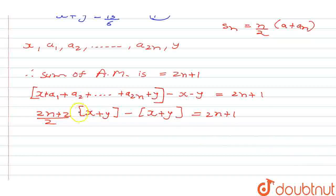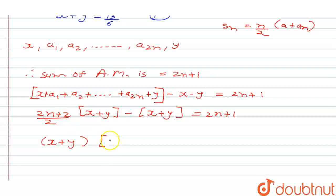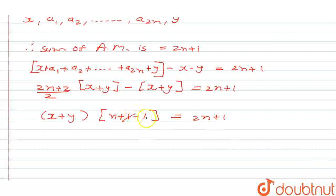Now this can be written as 2, 2 will be common out, so it will be cancelled. Now let's take x plus y common. So it will be x plus y into n plus 1 minus 1 is equal to 2n plus 1. As we have taken 2 common and cancelled it out. So from here it is going to be n only.